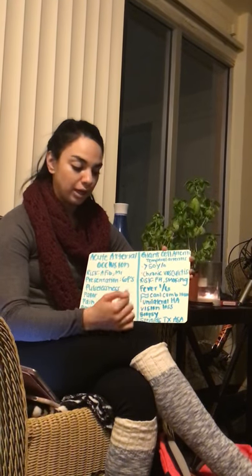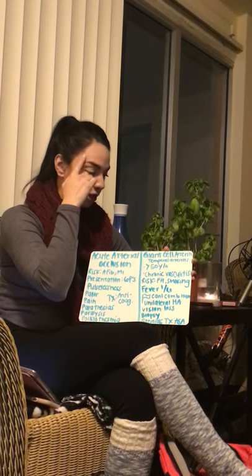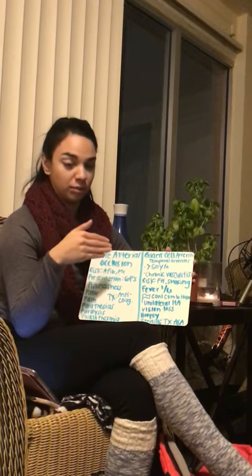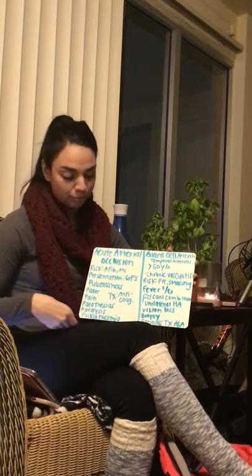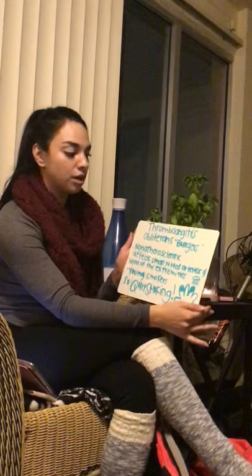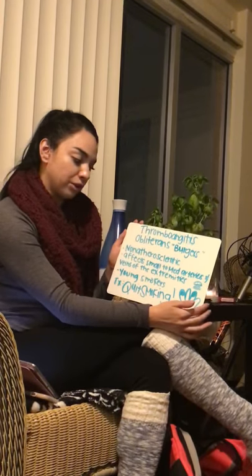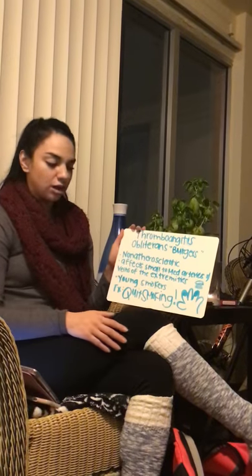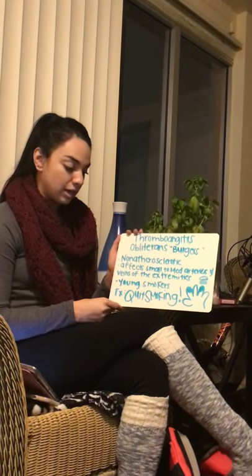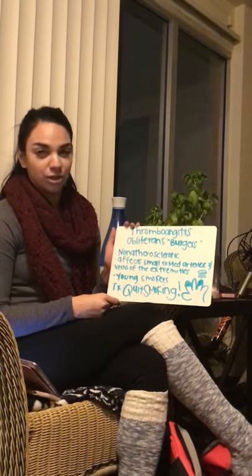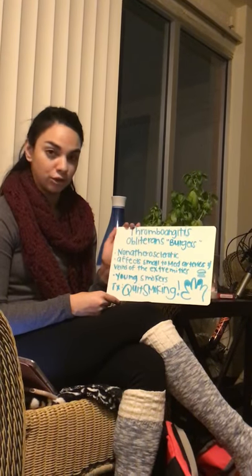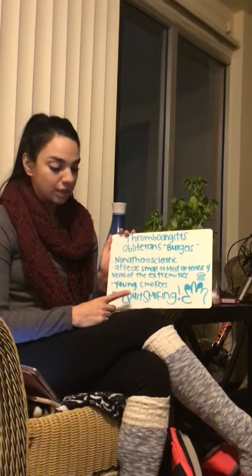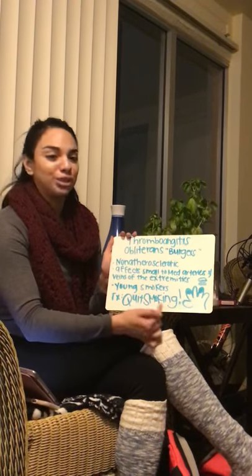It's good to know that you can actually see this in your patient — you'll see the temporal artery right here get really inflamed, which you should never be able to see unless something abnormal is going on. Now moving on to thromboangitis obliterans, also known as Buerger's disease. This is a non-atherosclerotic condition that affects small to medium arteries and veins of the extremities — your hands and feet — and it usually occurs in young smokers.